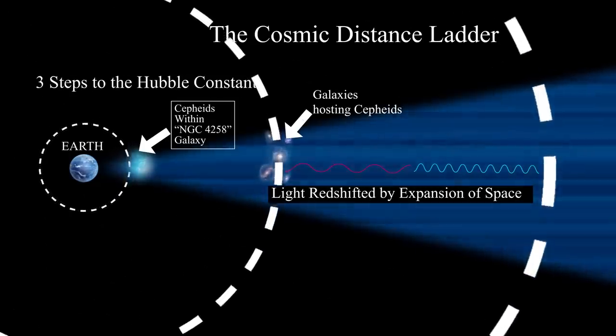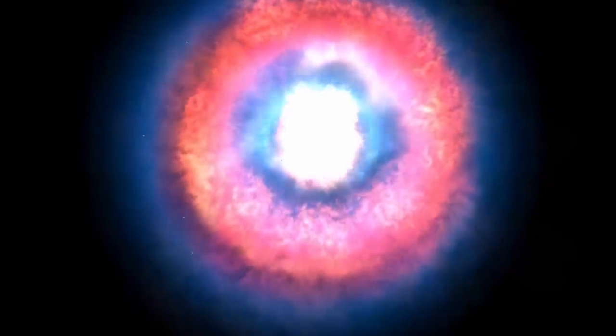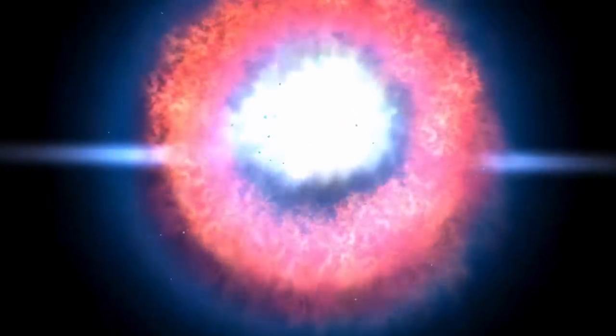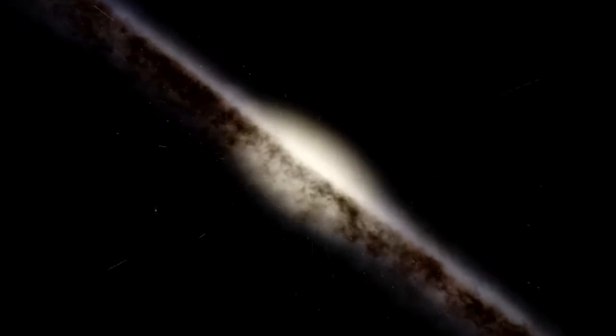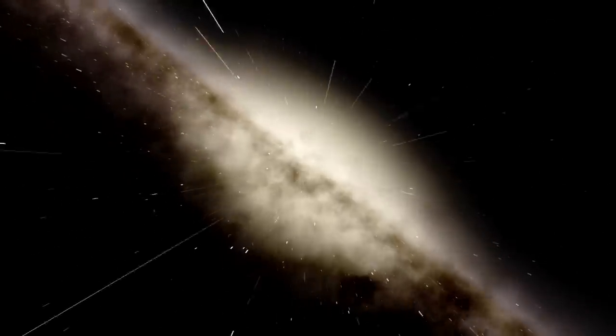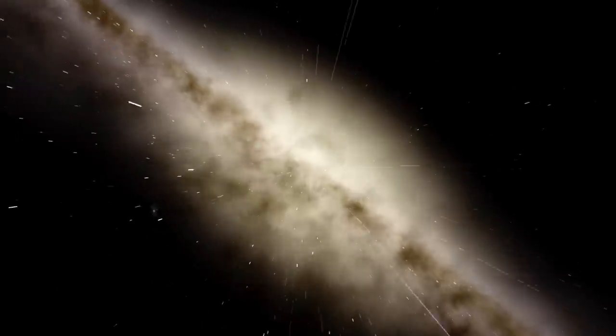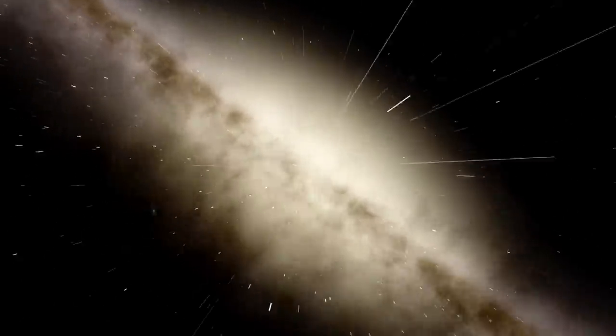Further up the Cosmic Distance Ladder are other types of variable stars, such as supernovae, which can be used to measure distances to galaxies at even greater distance. By using these different rungs on the Cosmic Distance Ladder, astronomers are able to measure distances to objects throughout the universe and build a more complete picture of its structure and evolution over time.